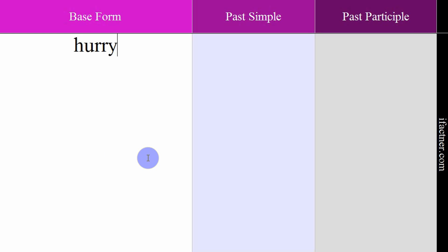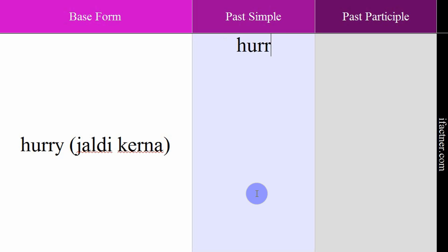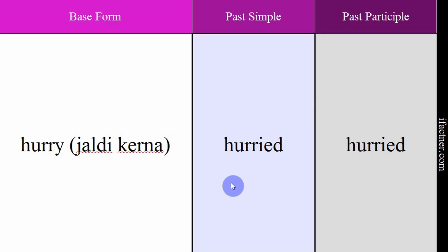The next verb is 'hurry', meaning jaldi kerna — to hurry. As in 'hurry up' — jaldi karo. Past simple and past participle: hurried. Past simple: 'I hurried to reach office on time.' — Maine jaldi ki taake mein office time pe pahunch jaoon. Past participle: 'He has hurried to reach the school on time.' — Usne jaldi ki hai taake woh school time pe pahunch jaaye. Verb: hurry. Meaning: jaldi kerna. Past simple: hurried. Past participle: hurried.